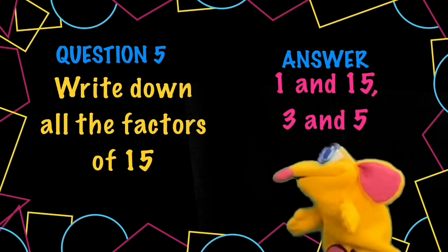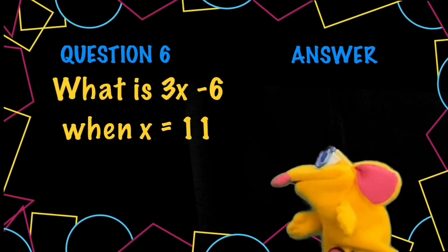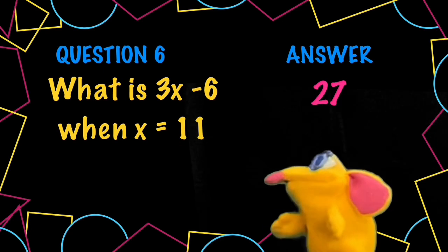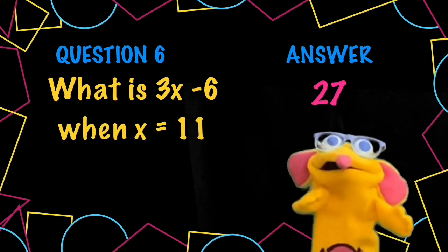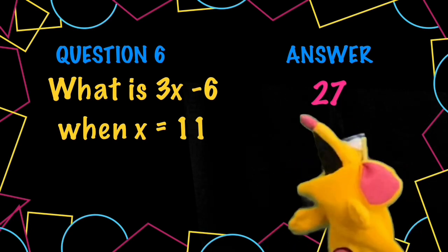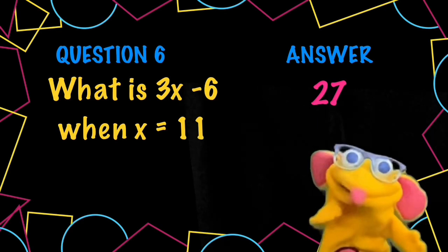Question six, please. If x is 11, 3x would be 33, take away 6, 27. I love algebra. The letters are just like missing number questions with the bubbles.